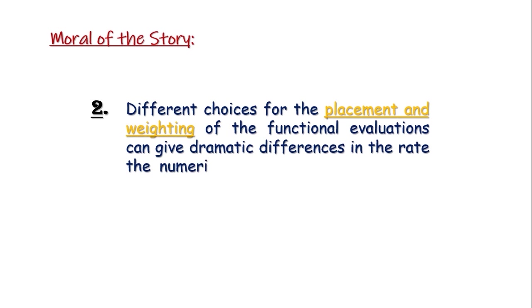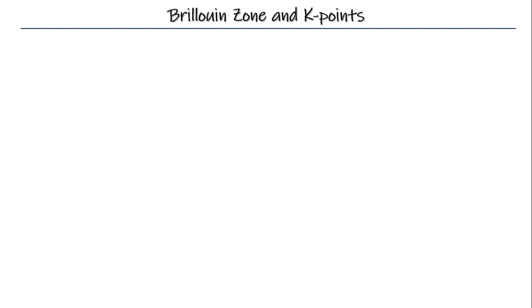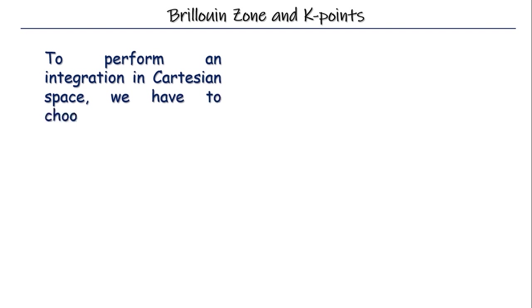Now, let's go back to our original domain, the domain of Brillouin zone and K-points. Remember, just as we have discussed, the integration that we have performed was in Cartesian space. And hence, the discrete points chosen were 2 Cartesian. So, when we perform any integration over reciprocal space, which points are to be chosen? Maybe you have guessed it right. These are K-points.